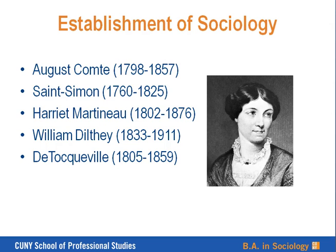In the introductory chapter, Dillon thumbnails five sociologists who are emphasized less extensively in later chapters: Auguste Comte, Saint-Simon, Harriet Martineau, Wilhelm Dilthey, and de Tocqueville. These are all foundational figures in the initial emergence of sociology, and their emphases are different to a certain extent than later theorists. Overall, in this chapter, Dillon provides a grounding in sociological theory.